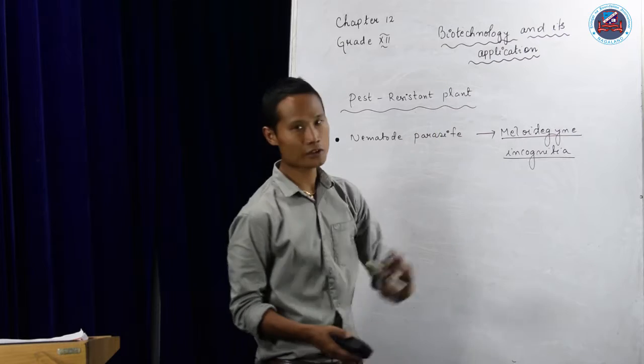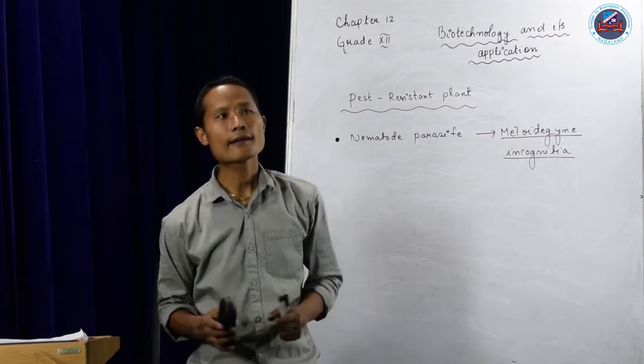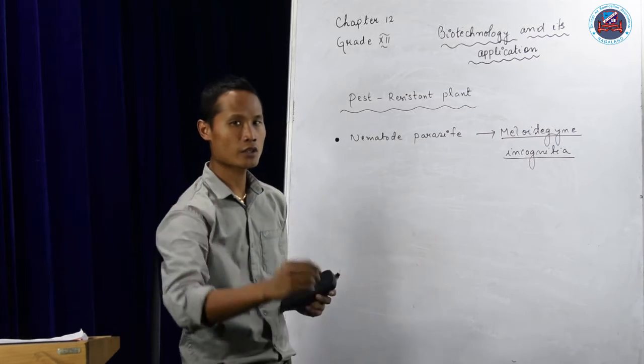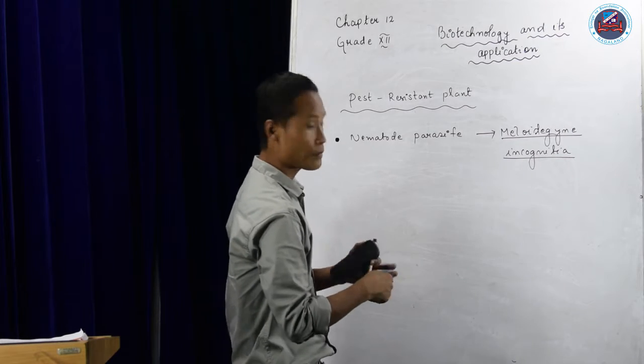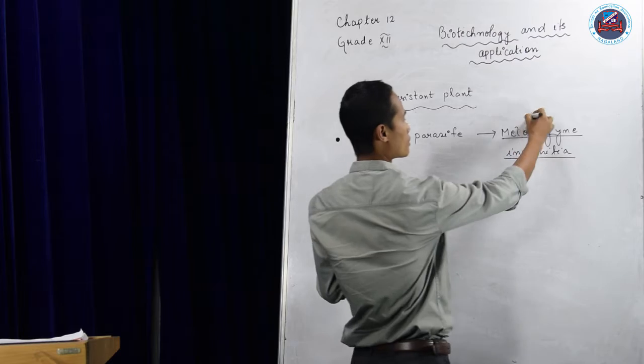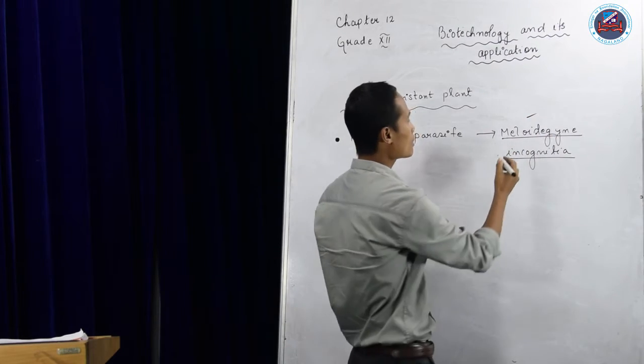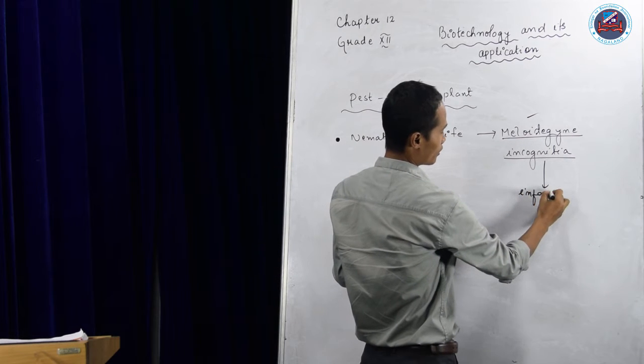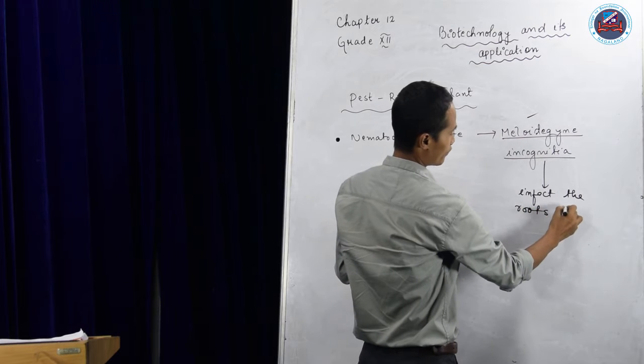Biotechnology or genetic engineering plays a very important role. In India, there was a time that the root of the tobacco plant was infected by a nematode parasite. This is a nematode parasite called Melodogne incognitia and this infects the roots of tobacco plant.